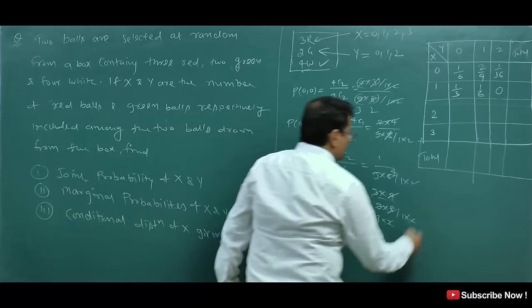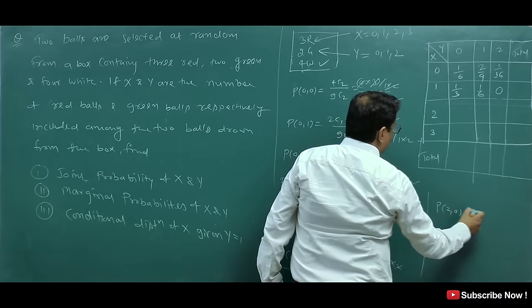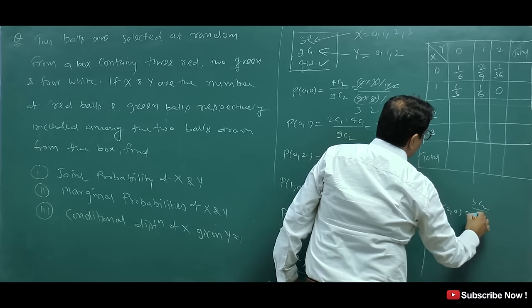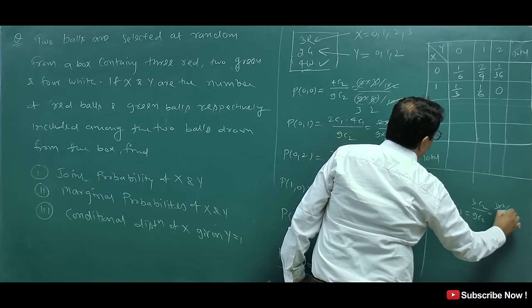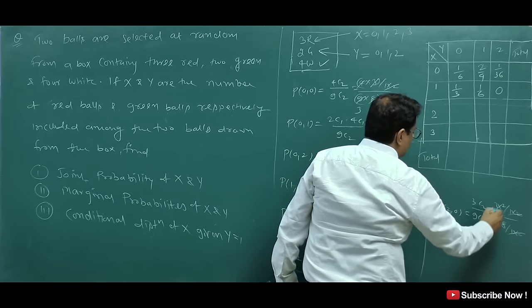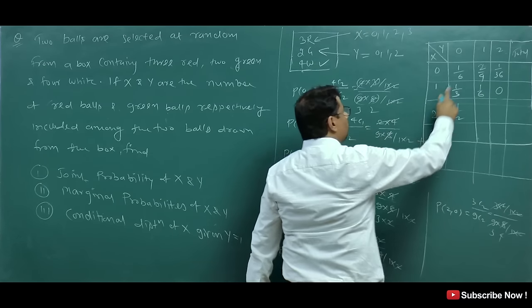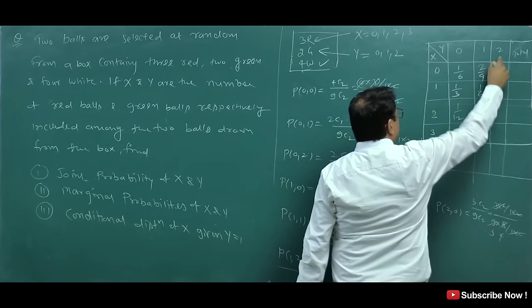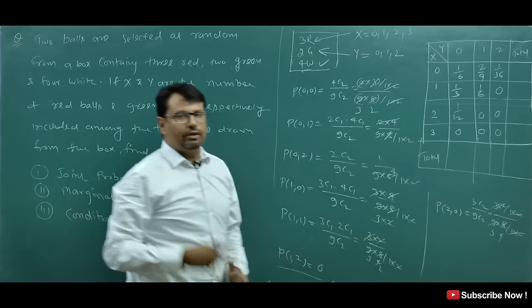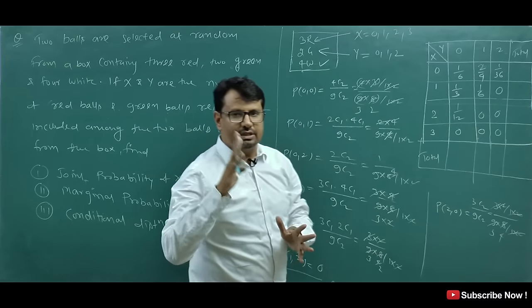For P(X=2, Y=0): two red and zero green. That is 3C2 divided by 9C2 = (3×2)/(1×2) divided by (9×8)/(1×2) = 3/36 = 1/12. Cases like (X=2, Y=1), (X=2, Y=2), (X=3, Y=anything) where the total exceeds two balls drawn will have probability zero.